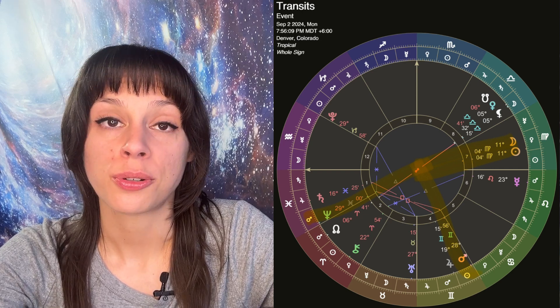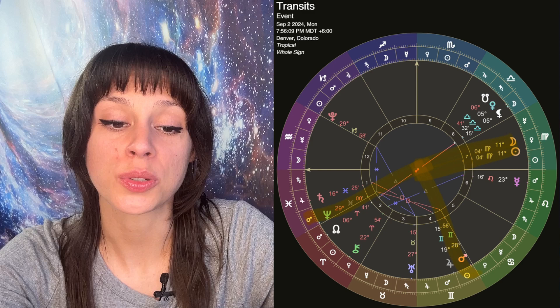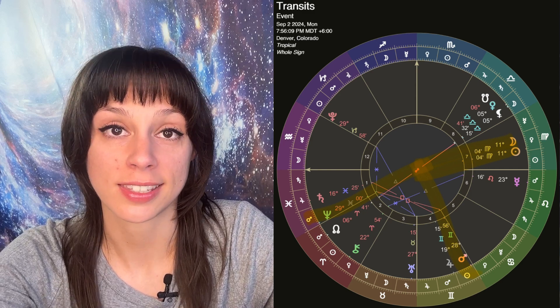When we get into Pisces season next year, that's in six months, we will have a Virgo full moon, and that will be the lunation correlated to this new moon. So whatever you set for your intentions right now, those will come to fruition in six months.